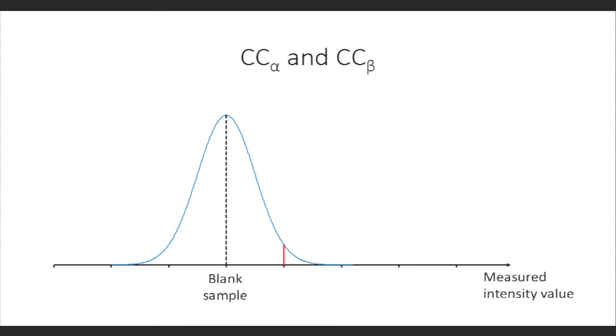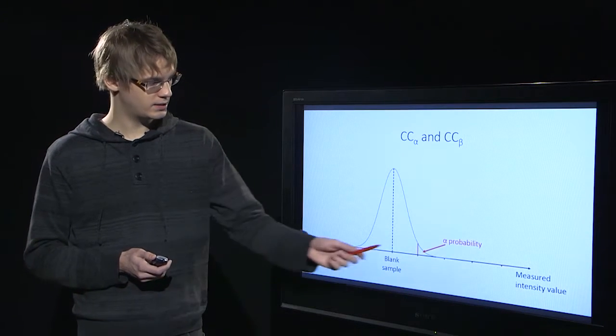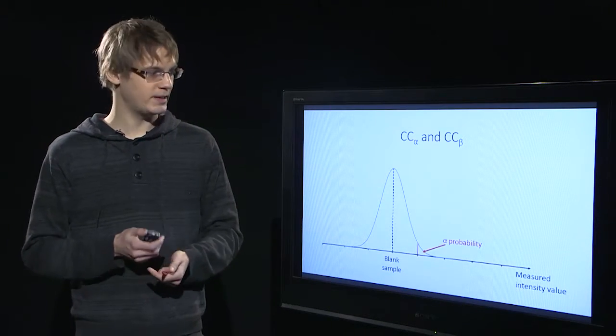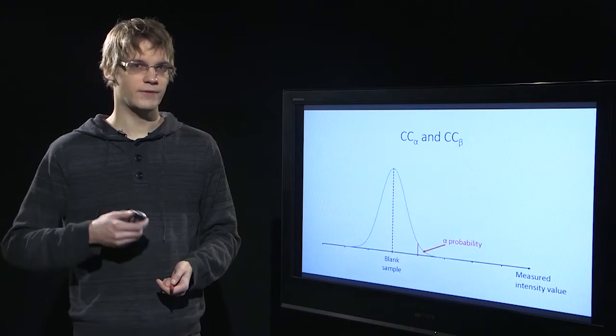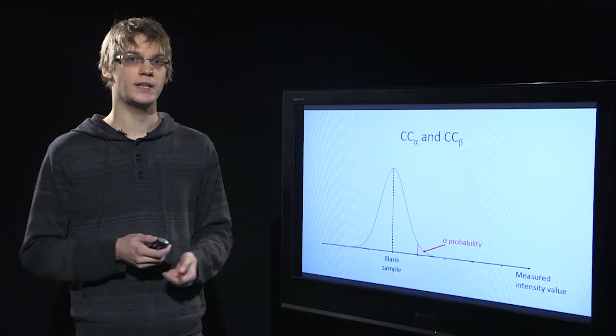Because the blank sample does not contain the analyte, this is actually the distribution of noise. We can also find this critical limit for it, and now this probability of receiving results above this critical limit is alpha as defined in decision limit.